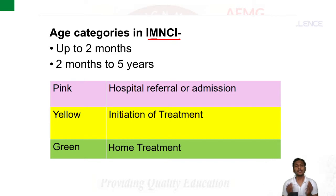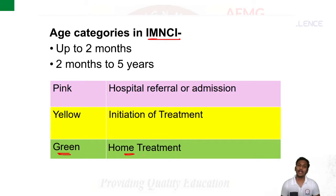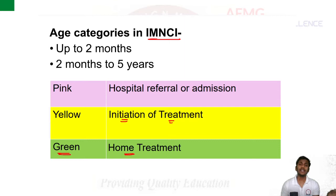According to the symptoms in the child, we classify into three categories. Green category: the patient is treated on an outpatient or home treatment basis. Yellow category: we initiate treatment and call the patient for follow-up. Pink category: this indicates that immediate admission or hospital referral should be done for that particular child.